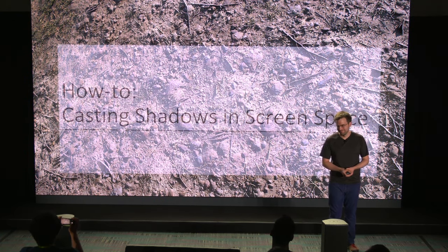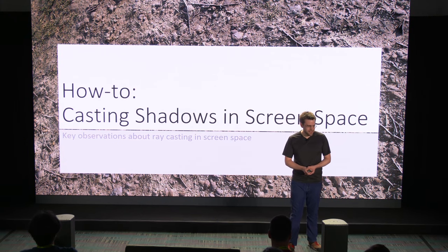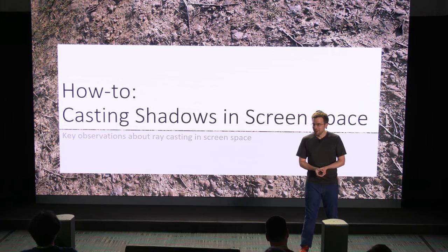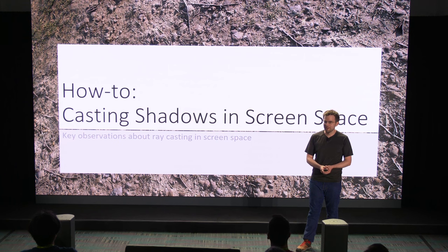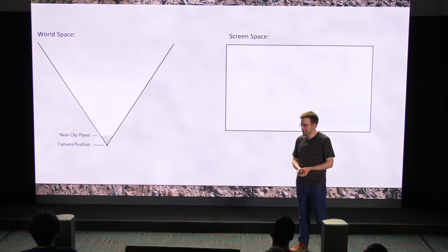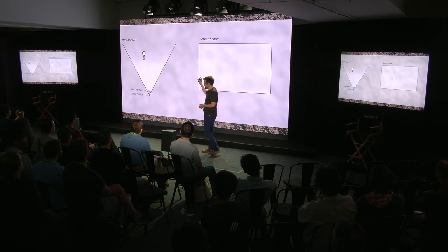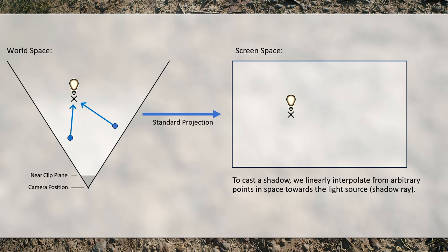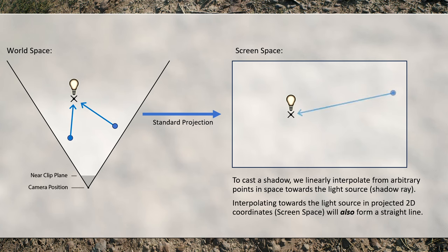Before we do that, I'm going to go back to basics. I have to cover how you actually do ray tracing in screen space. We're going back to coordinate systems 101. There are three key observations I need to make. First: light travels in a straight line. Not only do they travel in a straight line in world space, but due to the projection we're using, they also travel in a straight line in screen space. That makes things way easier because it means if we want to trace our screen ray, we just iterate towards the projected coordinate of the light.